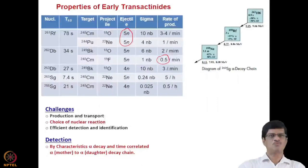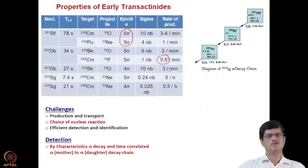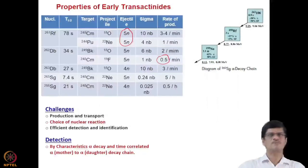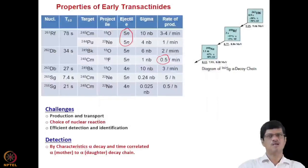There are mainly two isotopes of Seaborgium. 265-Seaborgium has a half-life of 7.4 seconds; it is produced from a 248-Curium target with a neon-22 beam at a cross section of 0.24 nanobarn, yielding 5 atoms per hour. 266-Seaborgium has a relatively longer half-life of 21 seconds; same target and projectile, but 4 neutrons are emitted, with a cross section nearly one order of magnitude lower and a production rate of 0.5 atoms per hour.